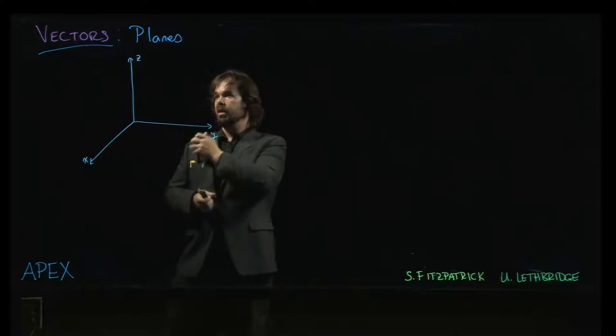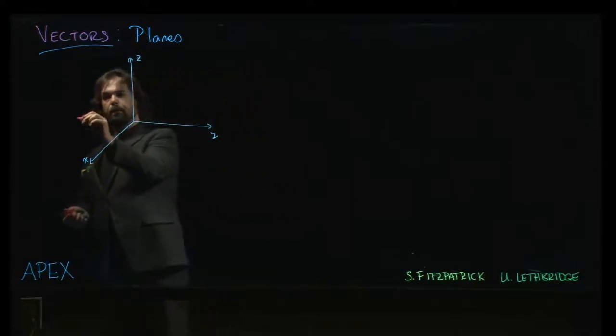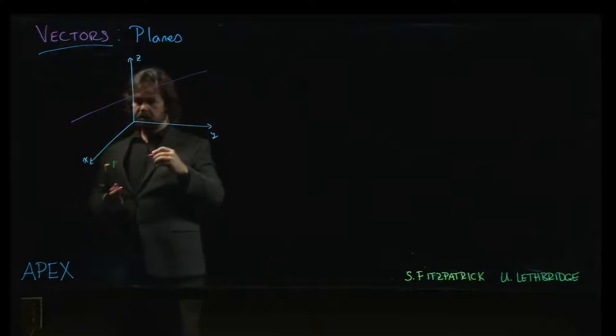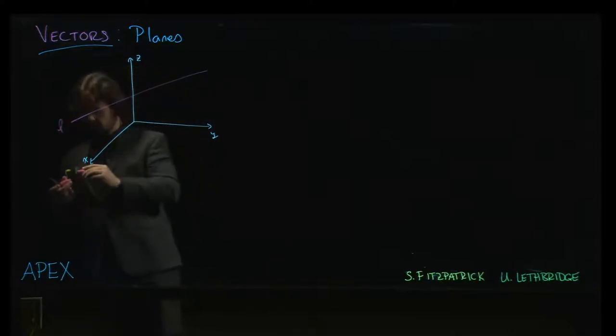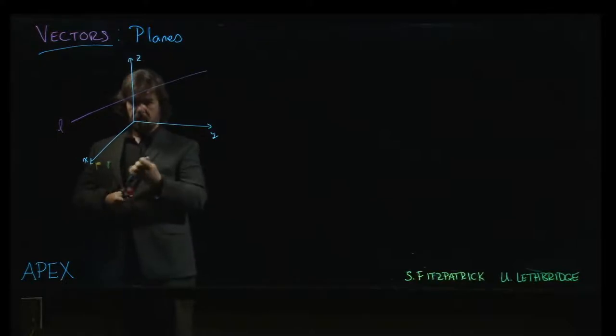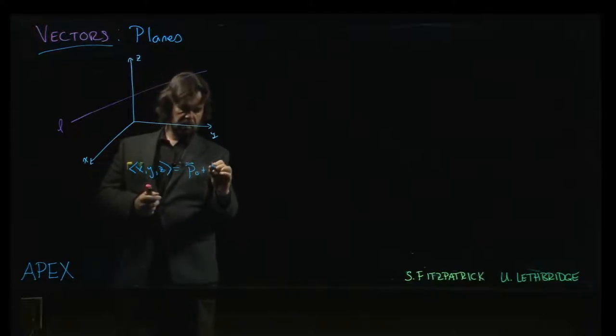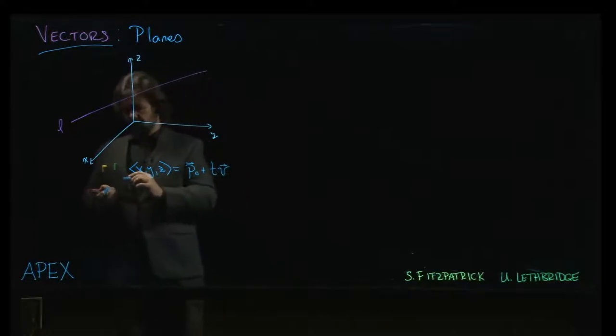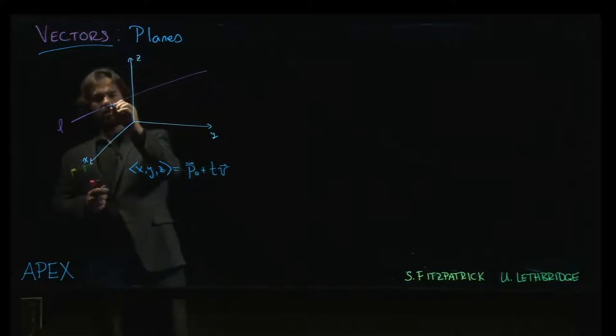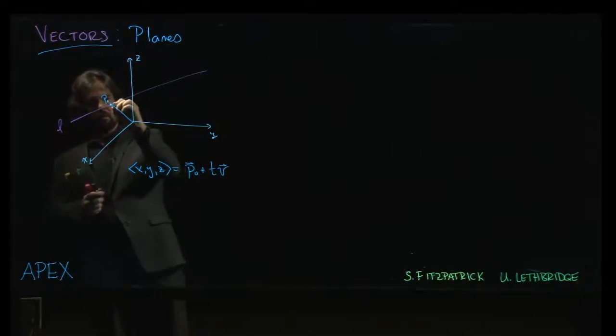So, just to get us started, as a reminder, we have a line L in three dimensions. How do we describe a line? Well, remember, we can do something like this. x, y, z is given by some, let's just write the shorthand vector form. Some point p0 plus t times v. So, what does that represent? That represents some initial point on the line.